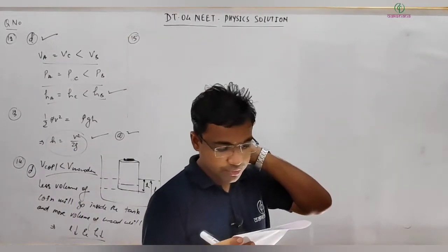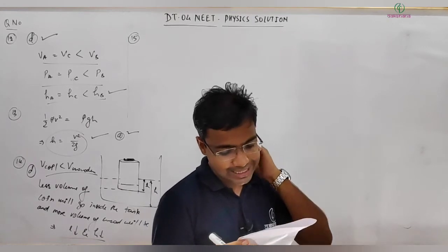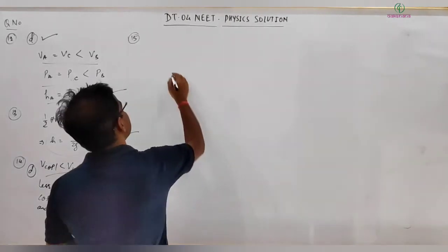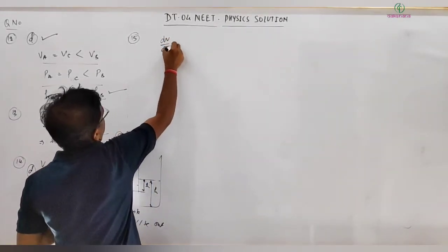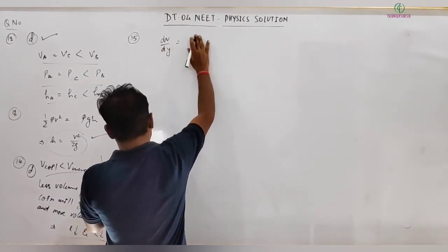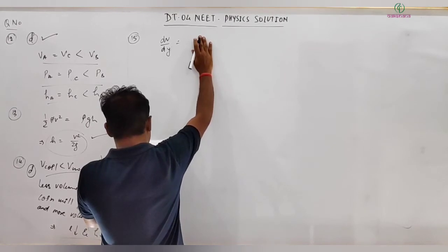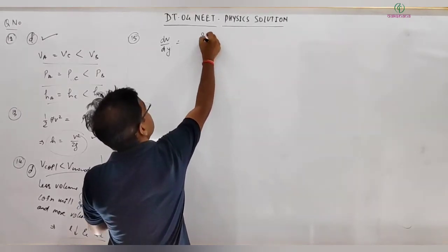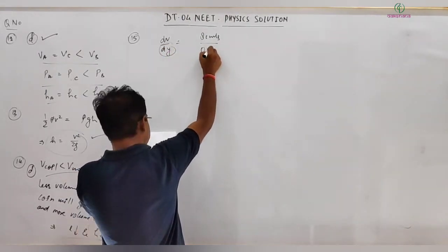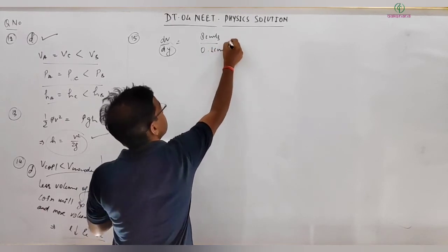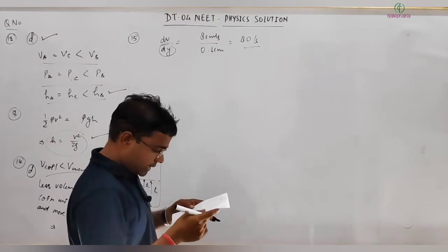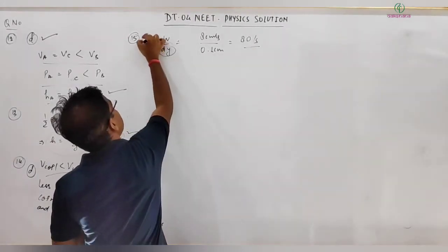Question 15: The relative velocity of two consecutive layers is 8 cm/s and the perpendicular distance between them is 0.1 cm. The velocity gradient dv/dx = 8/0.1 = 80 per second. This is the velocity gradient.